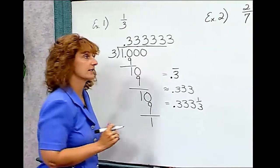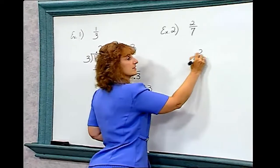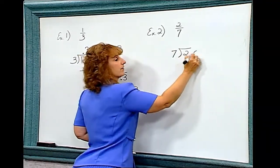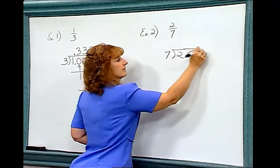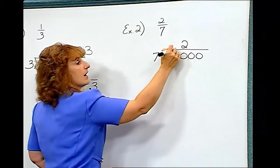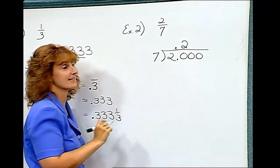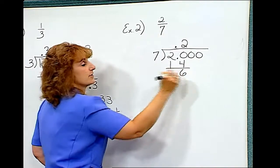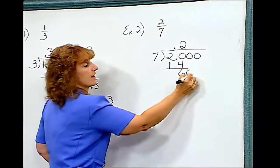Let's look at our second example: two-sevenths. When I divide two divided by seven, seven goes into twenty two times. Never forget that decimal. We get fourteen, we're going to subtract and bring down the zero.